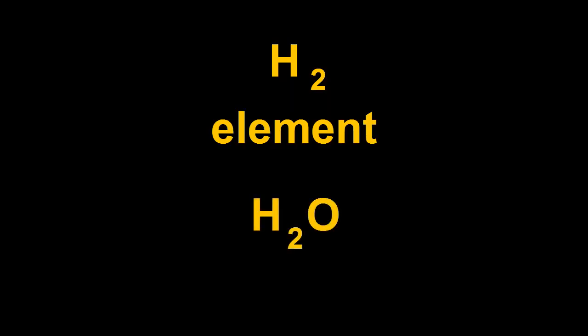When the molecules of a substance are made of just one kind of atom, like H2, we call it an element. But when the molecules of a substance are made of different kinds of atoms, like H2O, we call it a compound.